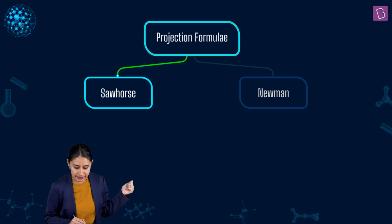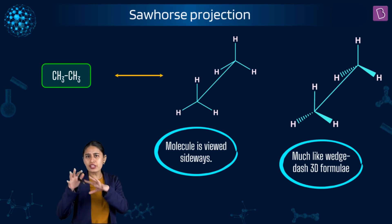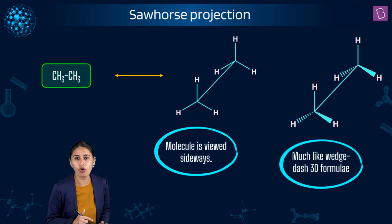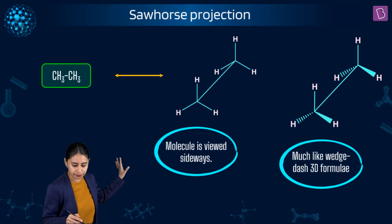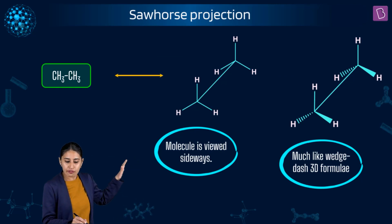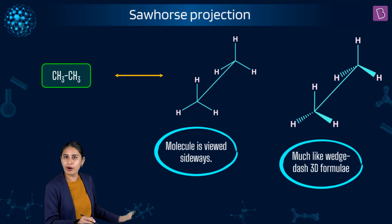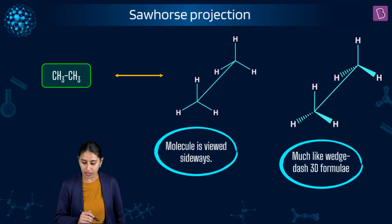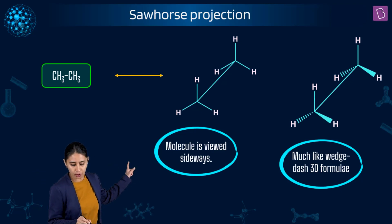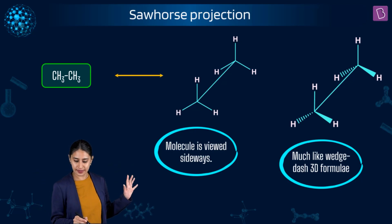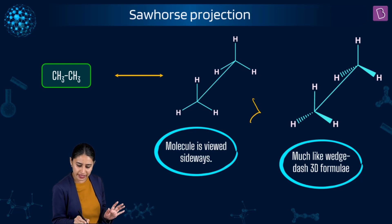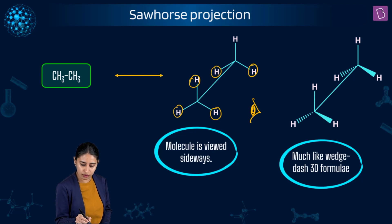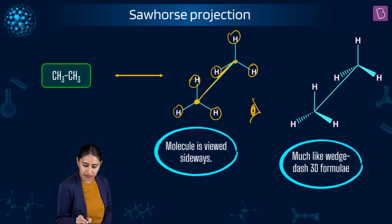When we talk about sawhorse, imagine these kinds of slant lines. Now, how are we viewing a molecule? Let's take ethane here — CH3, CH3. The molecule is viewed sidewise. If you see it sidewise, we have three hydrogens here, three hydrogens here, one carbon here and one carbon here — two carbons and six hydrogens.